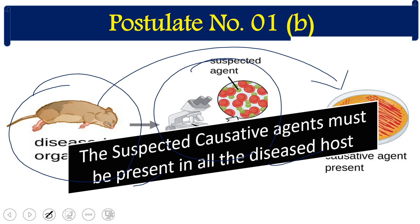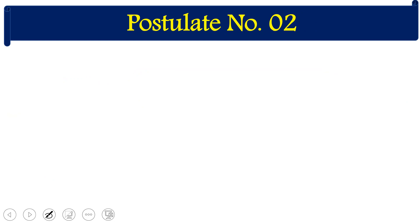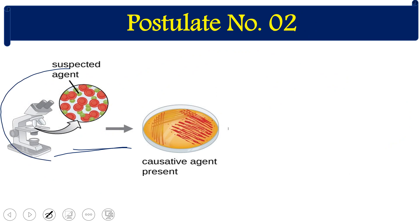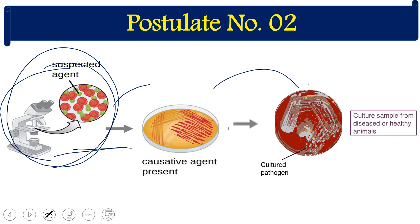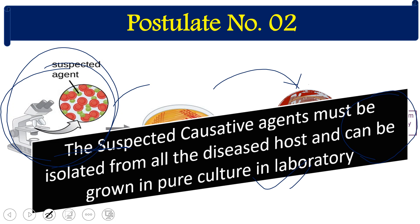The second part of the first postulate states that from a diseased organism that has died, we should be able to isolate a pathogenic organism — the causative agent. Merging both parts: the suspected causative agent must be present in all diseased hosts whereas it must be absent in all healthy hosts. The second postulate states that this isolated causative agent must be grown in a pure culture — a single colony of that organism — in the laboratory.